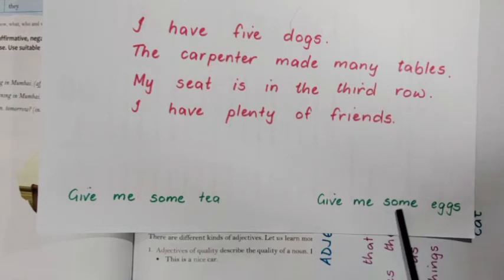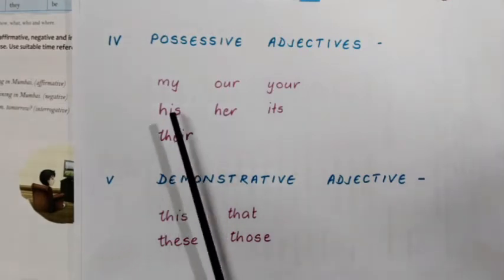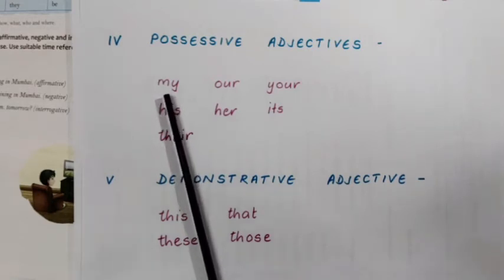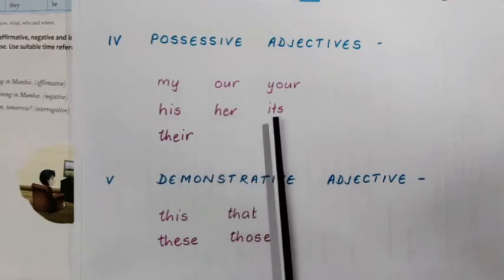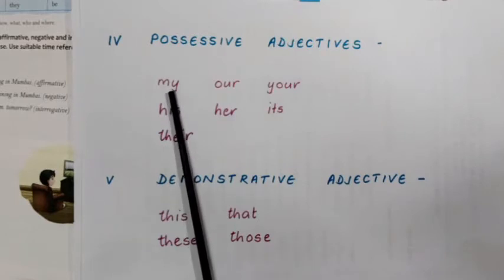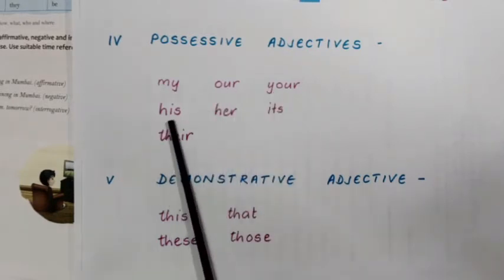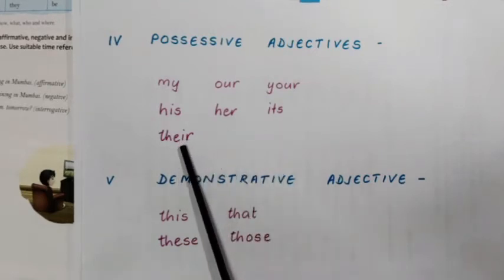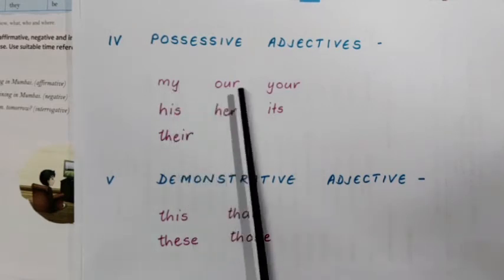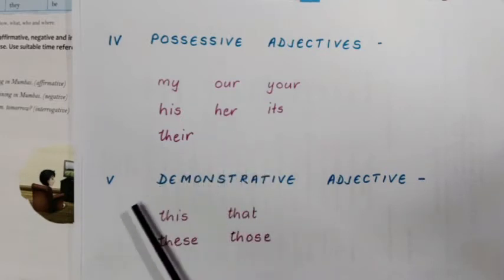Number four: possessive adjectives. Please memorize these seven words: my, our, your, his, her, its, and their. Examples: 'My house,' 'our books,' 'your clothes,' 'his house,' 'her garden,' 'its tail,' 'their parents.' These words are used with other nouns, and when used that way, they are possessive adjectives.